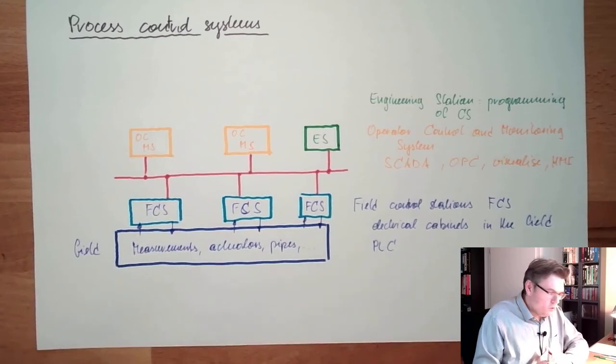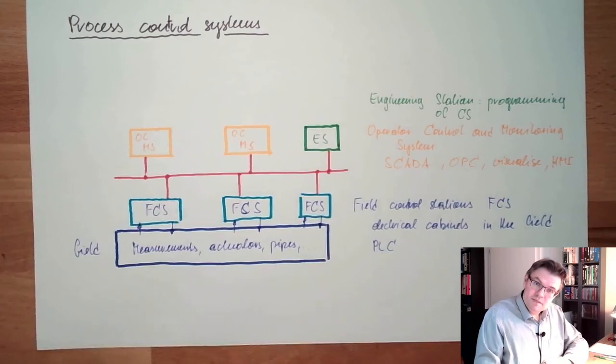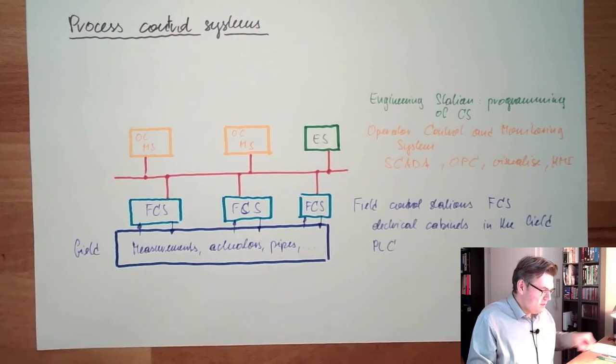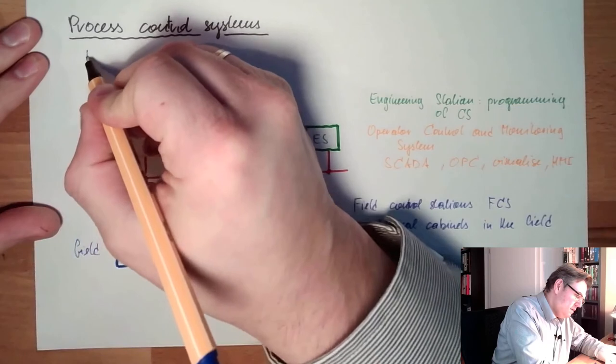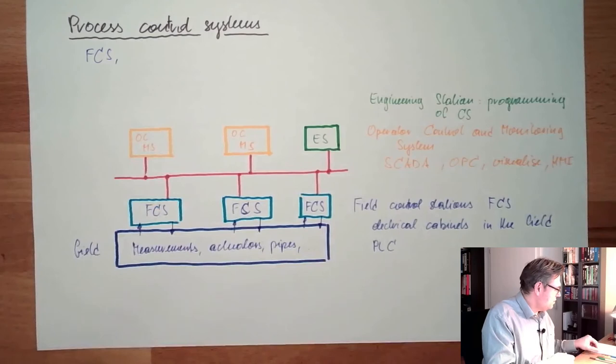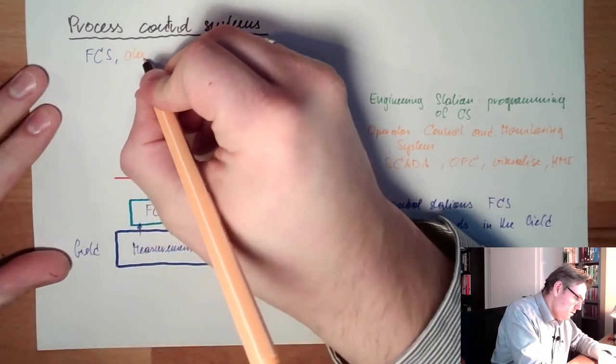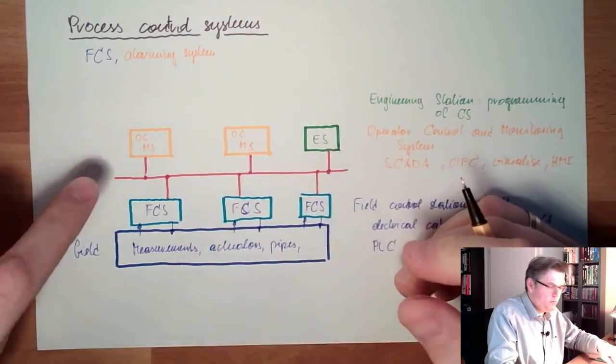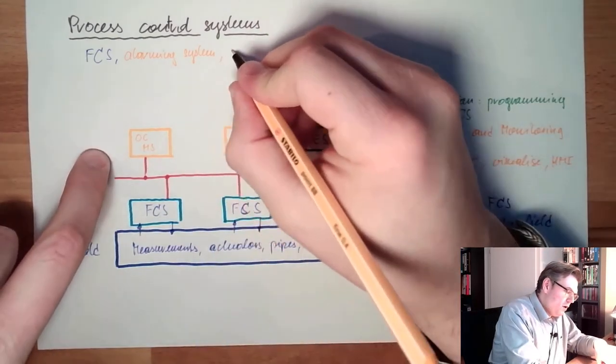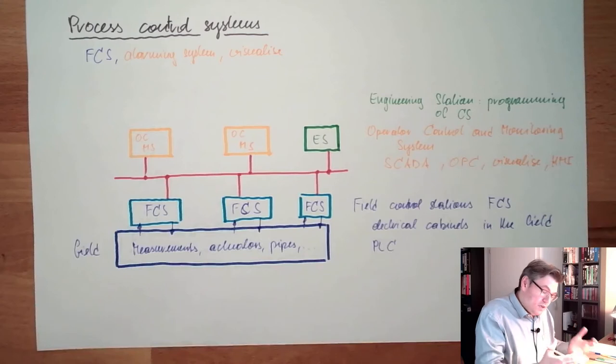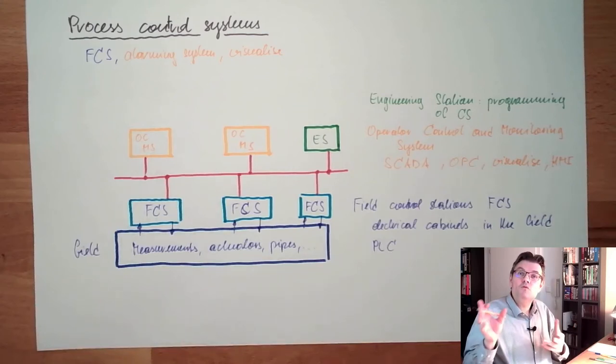These are the things a process control system consists of. What do we usually have? Such monitoring control systems consist of these FCS - field control stations. Then there is an alarming system, usually built in here. Then there is visualizing with symbols, flowcharts, something to show the process and the actual situation.